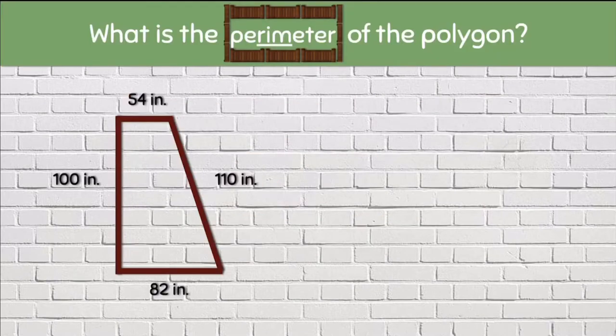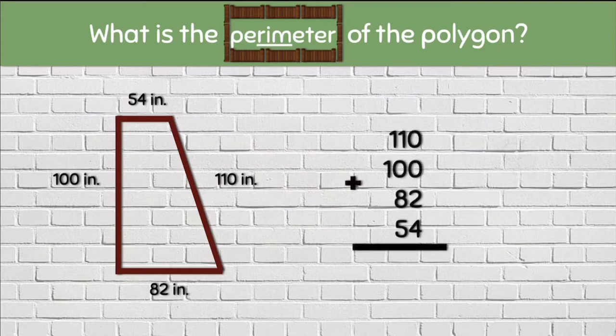Here we have a polygon with four sides. Let's add up all of the sides to find the perimeter. We have 110 plus 100 plus 82 plus 54.